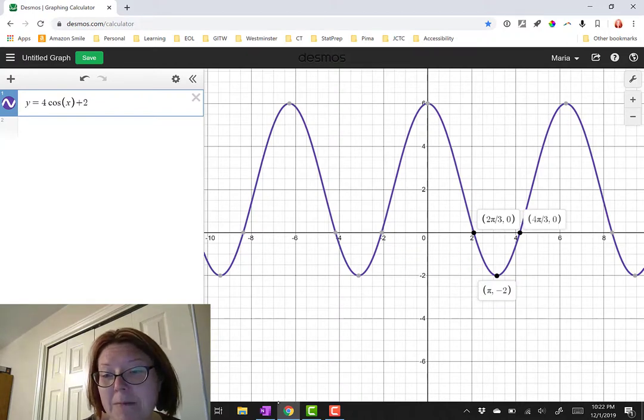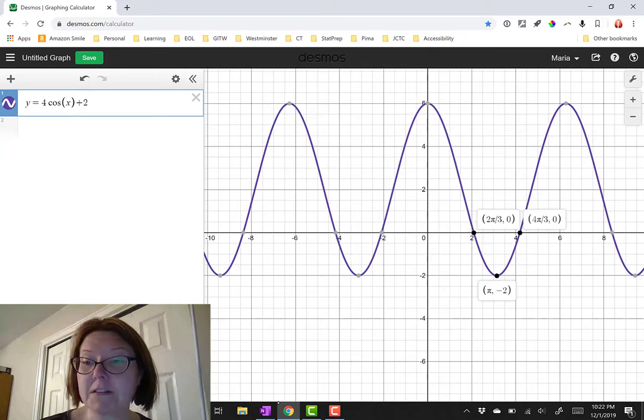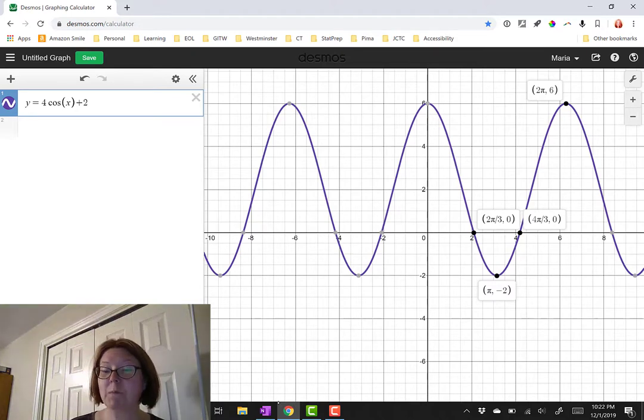Then back up to the x-axis at 4 pi over 3 comma 0 and back up to the top of the periodic function at 2 pi comma 6. It continues to repeat that cycle over and over.